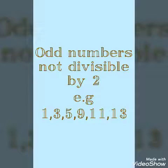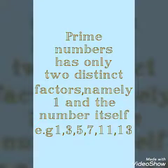The next term we use for this exercise is prime numbers. Prime numbers have only 2 distinct factors, namely 1 and the number itself. For example: 1, 3, 5, 7, 11, and 13. These are numbers that cannot be divisible by any other number except themselves, so they have only 2 factors — 1 and the number itself.